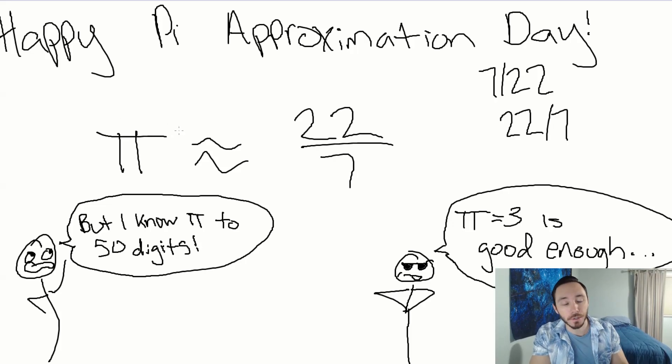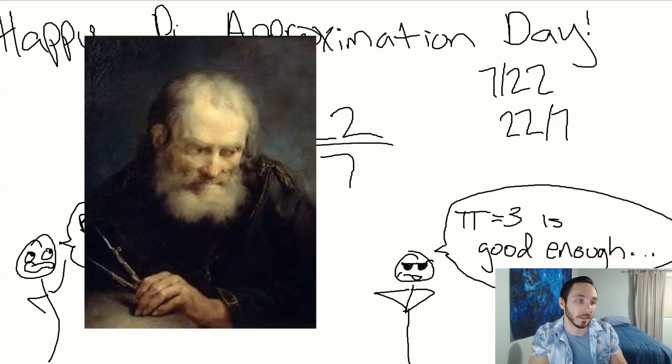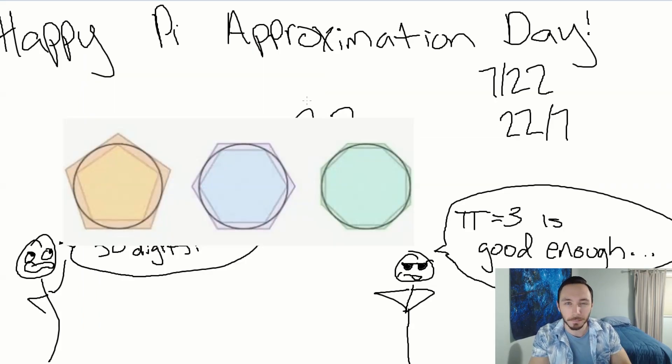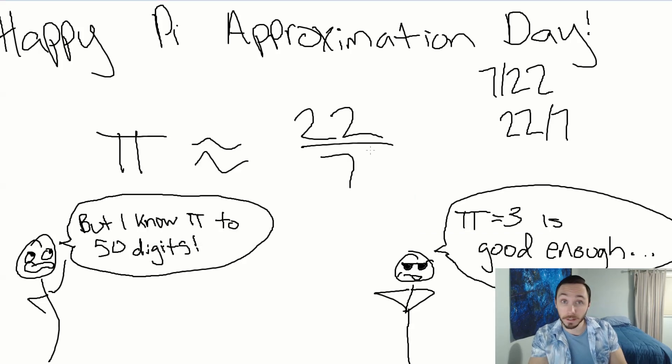Pi was first approximated around 250 BC by a guy named Archimedes, which is why it's also known as Archimedes Constant. Through his method of inscribing polygons in circles, he got that Pi was about 22 over 7. I want to approximate Pi today too.